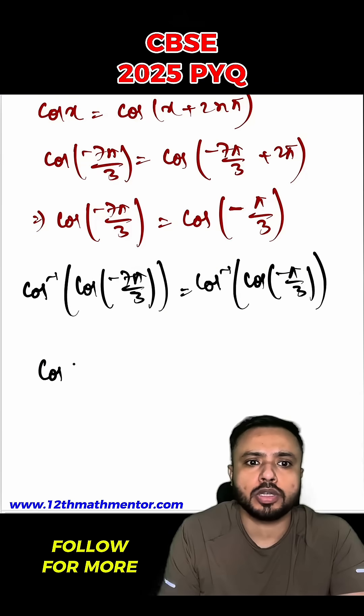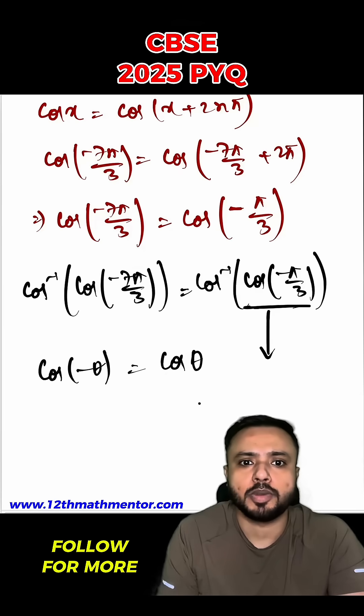We all know that cos of minus theta is equal to cos theta. Hence I can say that this is nothing but cos inverse cos of pi by 3.